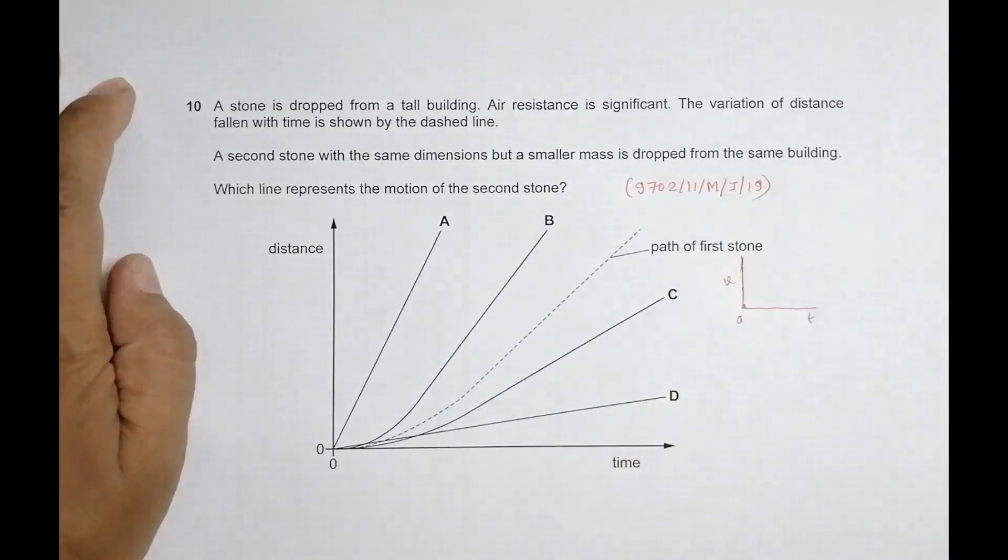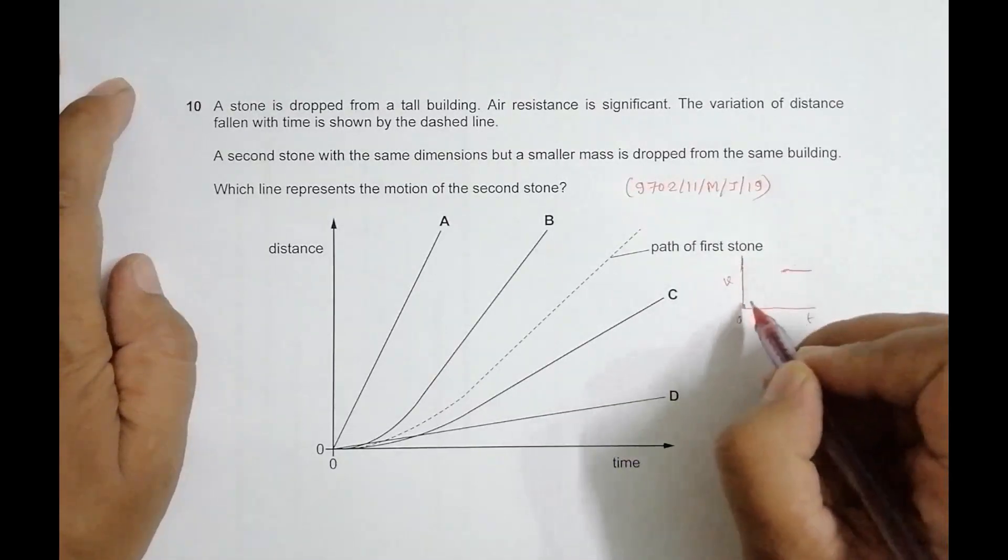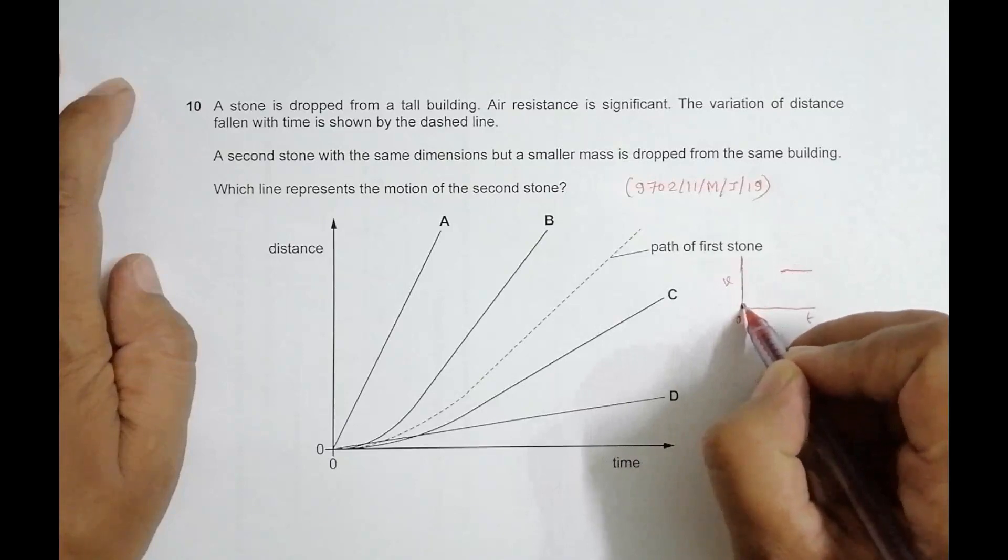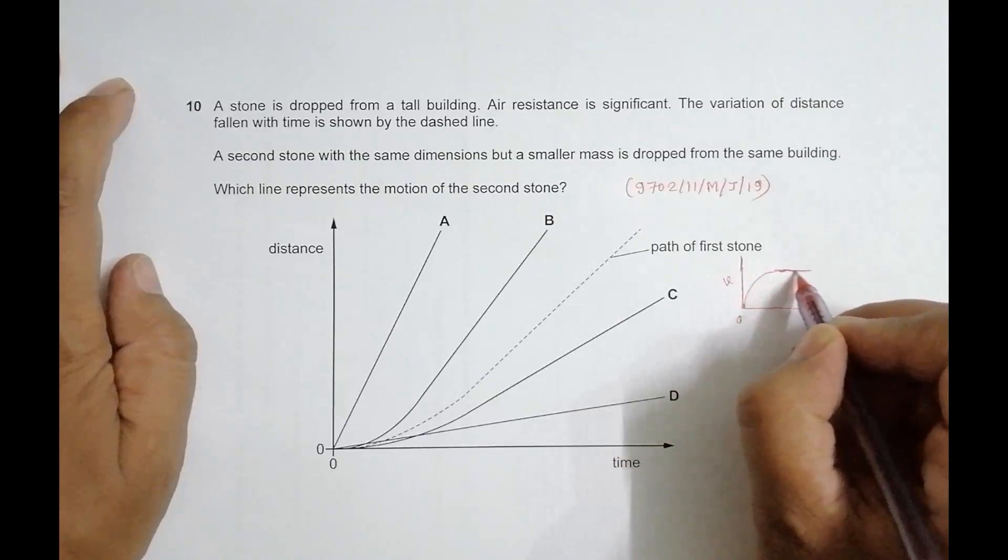Ultimately, the resultant force becomes 0, which means acceleration is 0 and velocity should be constant. From here to here, the rate of change of v goes on decreasing until the rate becomes 0.